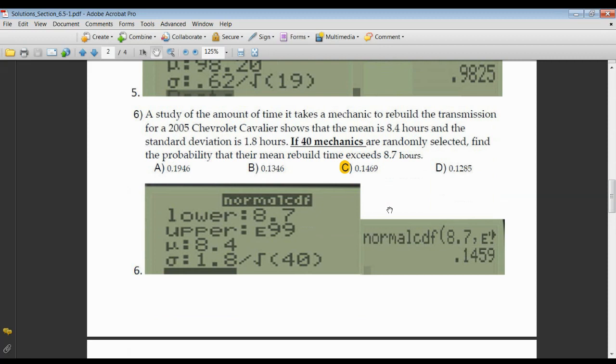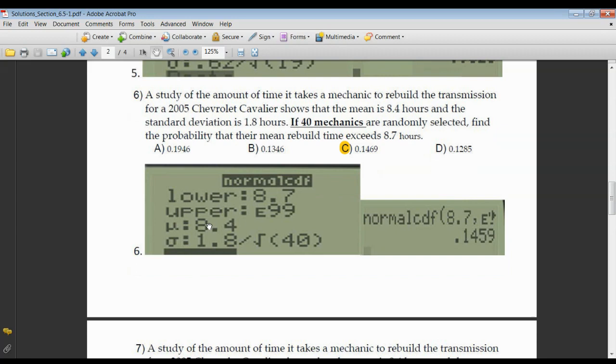The remaining ones all deal with the Chevrolet Cavalier. Here we're asked to find the probability that the mean rebuild time for these 40 mechanics exceeds 8.7. Exceeds means you're getting larger. Your lower is 8.7. Larger means all the way to positive infinity, E99. The mean was given to us as 8.4. Standard deviation is the original standard deviation for one mechanic divided by the square root of how many mechanics we're speaking about here, 40. Here the answers are off by ten-thousandths. No big deal. 0.1459, 0.1469.